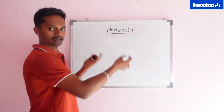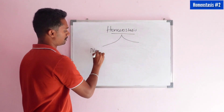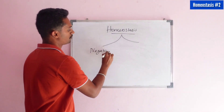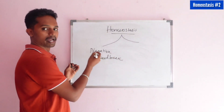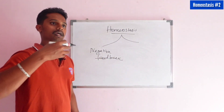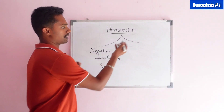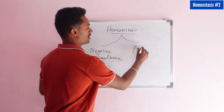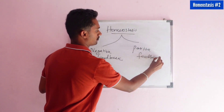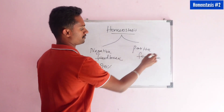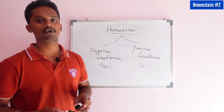There are two types of homeostasis: the negative feedback mechanism and the positive feedback mechanism. In the negative feedback mechanism, more than 90% of our body's homeostasis is covered. The positive feedback mechanism accounts for less than 10% of homeostasis.